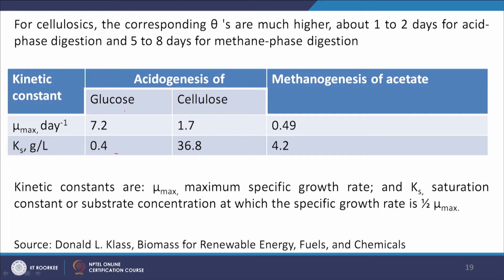It is clear that the methanogenic step takes a longer period and is the rate-limiting step for glucose. The table shows μ_max and k_s values for glucose and cellulose: μ_max is higher for glucose than cellulose and k_s is lower for glucose than cellulose, indicating glucose is more easily degradable. For the methanogenic step, μ_max is 0.49 compared to 4.2 for acetic acid methanogenesis, confirming it is the slowest step.